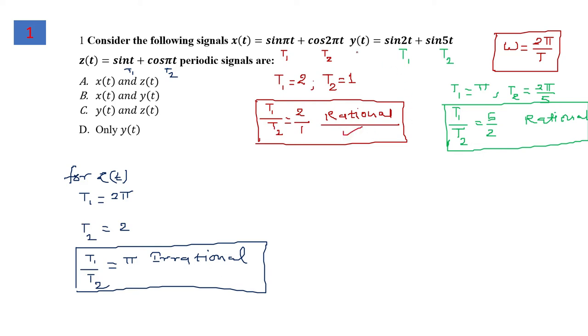Similarly for signal y(t), T1 is π and T2 is 2π/5. The ratio T1/T2 is also rational, so the first two signals are periodic. For signal z(t), the ratio T1 and T2 results in π, which is irrational. Therefore, the answer is part B: x(t) and y(t) are periodic.